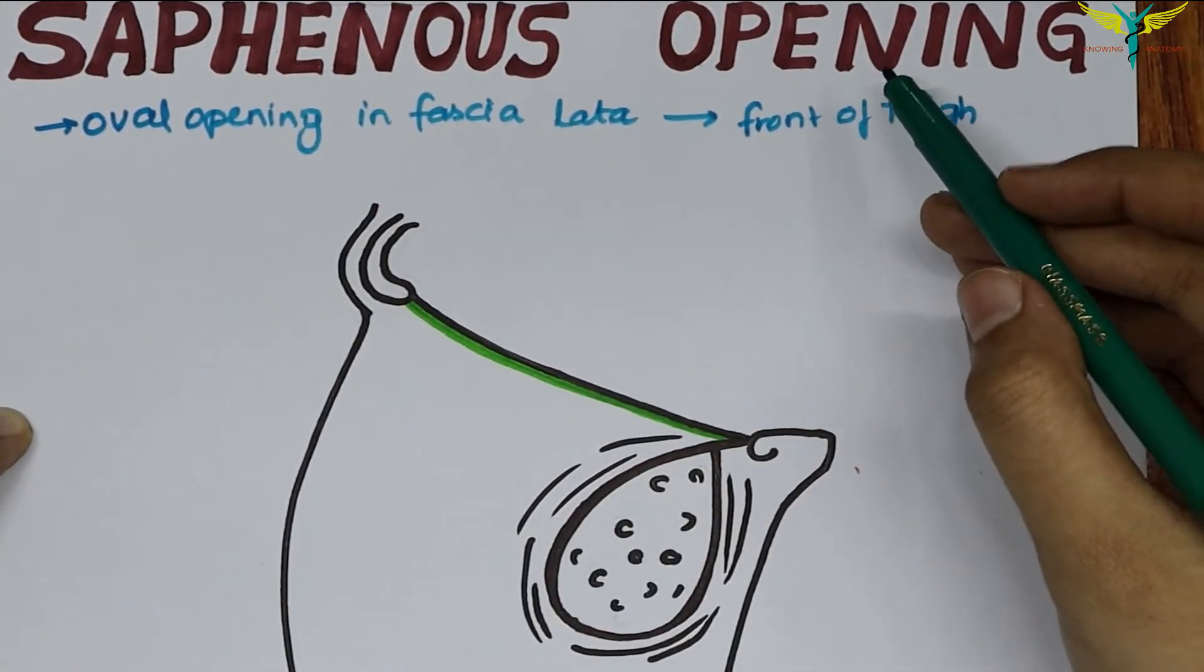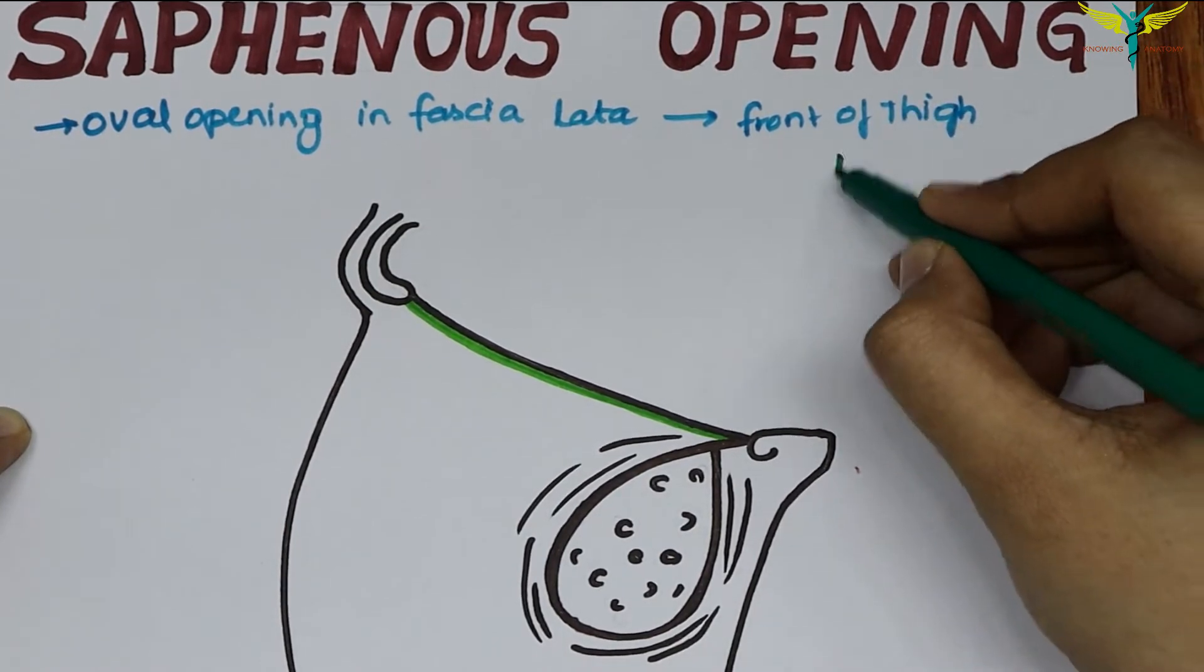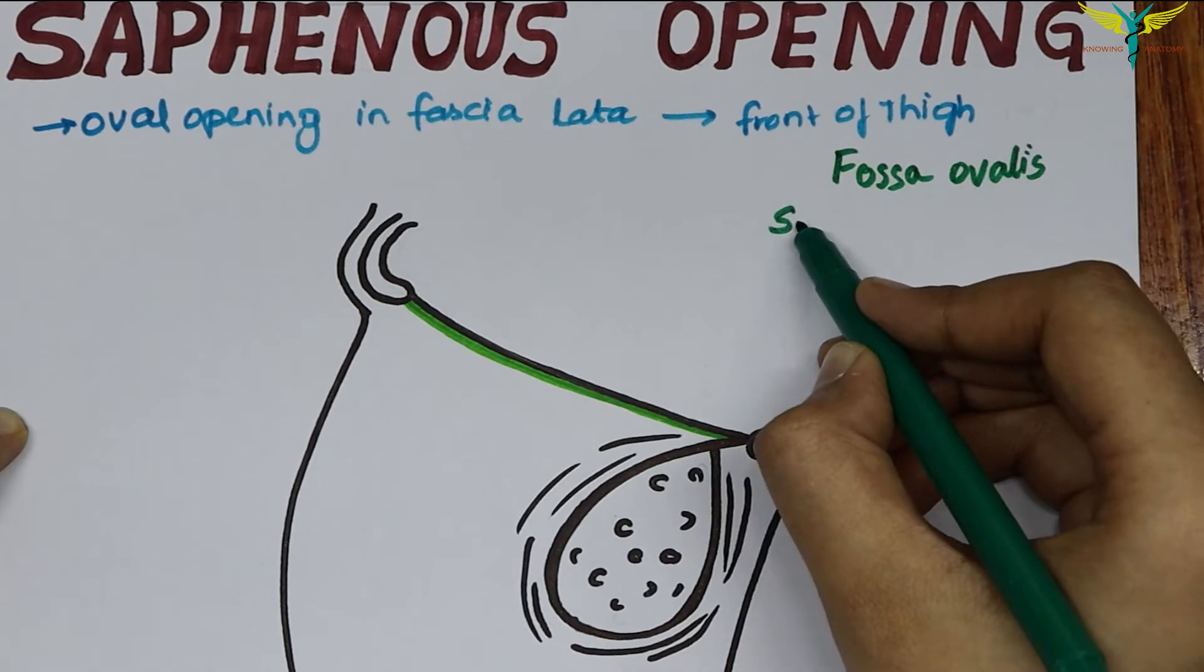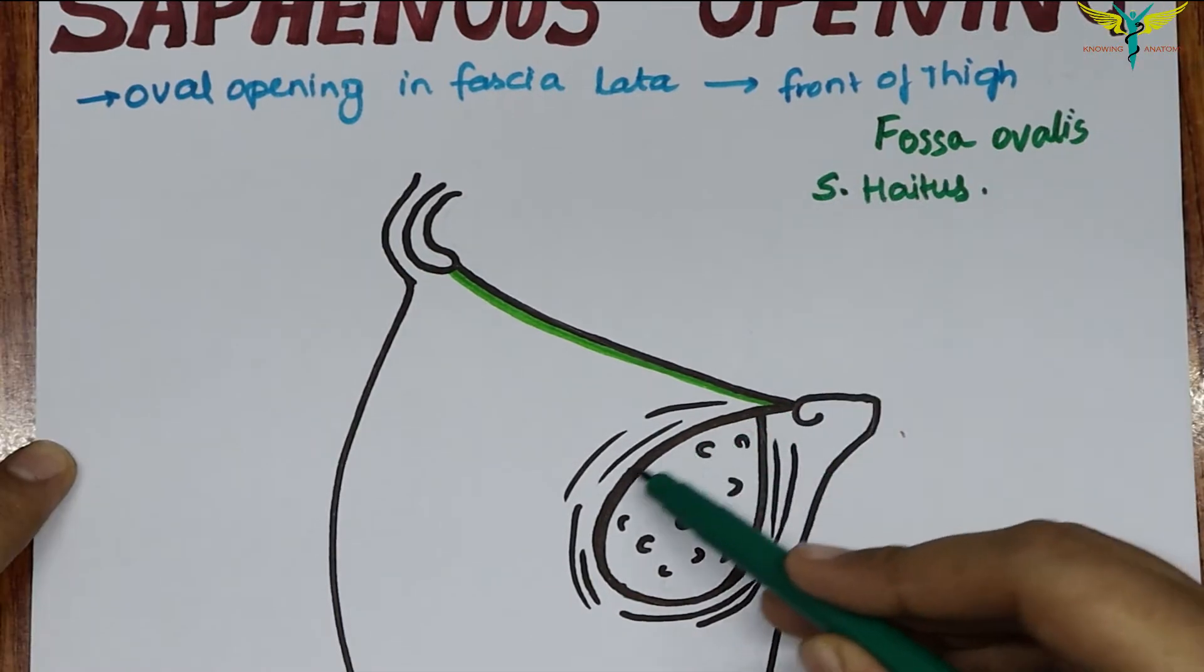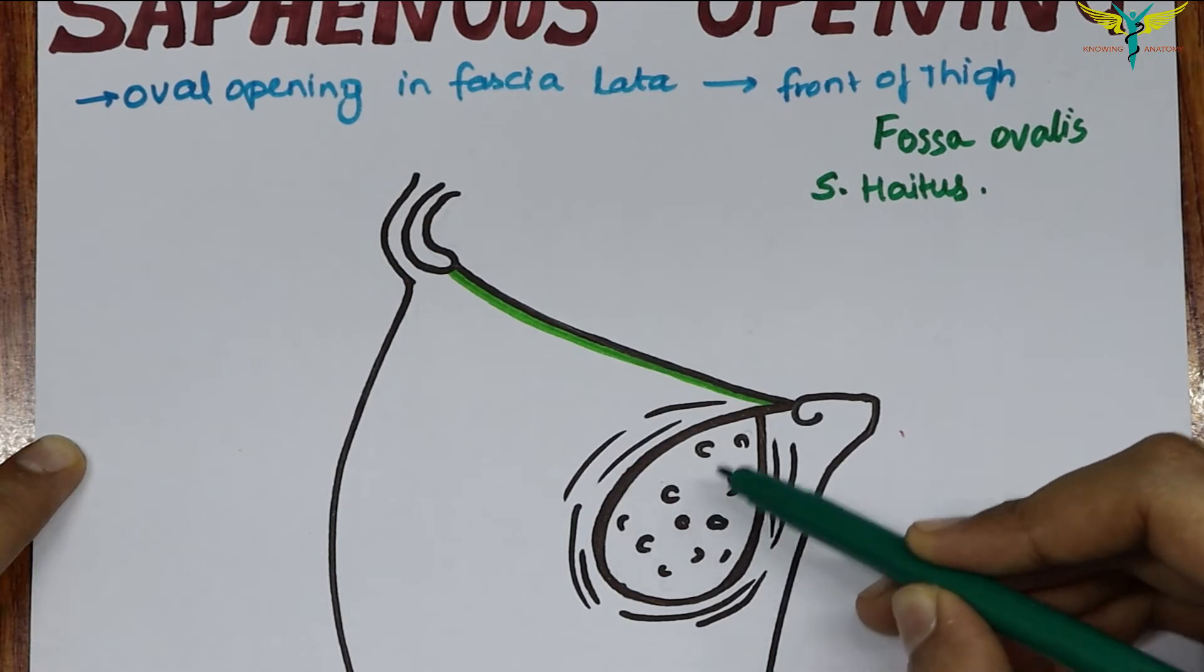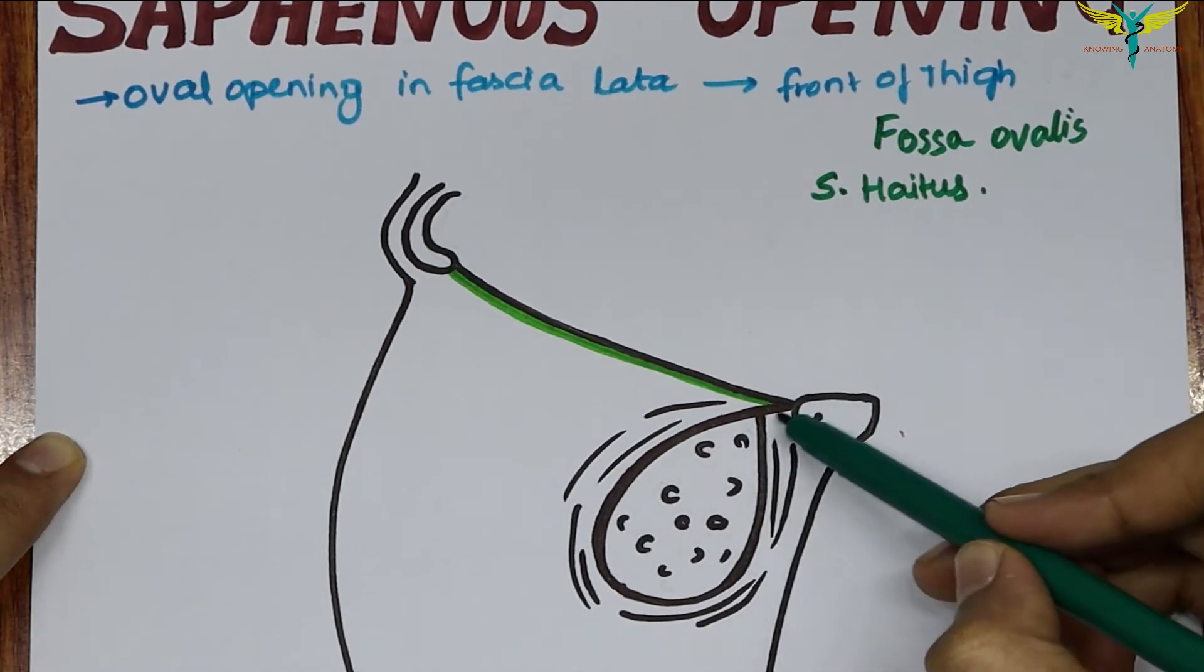The saphenous opening is also called the fossa ovalis because of the oval shape, or the saphenous hiatus. The center of the opening is about 4 cm below and lateral to the pubic tubercle.